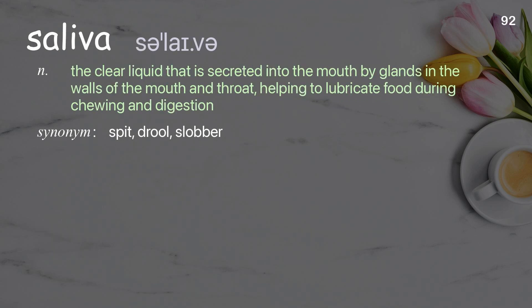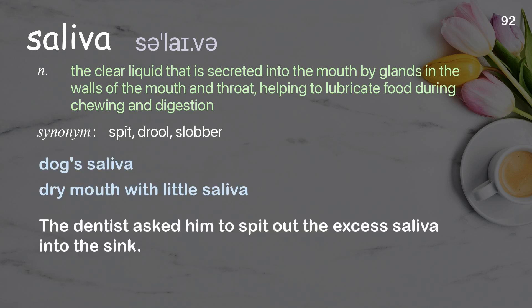Saliva: the clear liquid that is secreted into the mouth by glands in the walls of the mouth and throat, helping to lubricate food during chewing and digestion. Examples: dog saliva, dry mouth with little saliva. The dentist asked him to spit out the excess saliva into the sink.